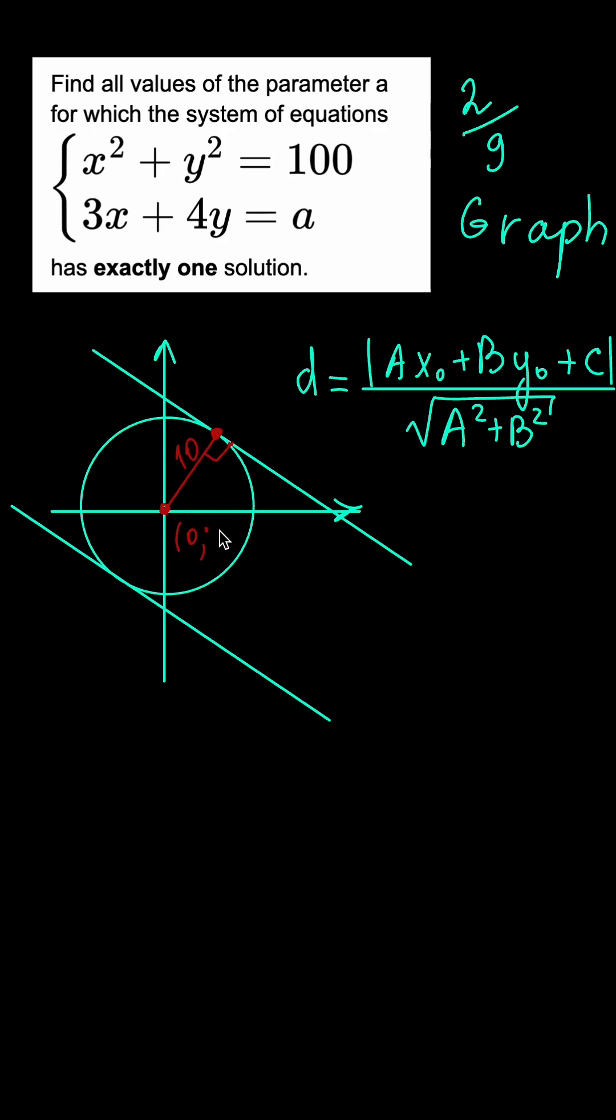So we have a point with coordinates 0,0 and a line defined by 3x plus 4y minus A equals 0. So we have to substitute x and y here with 0,0 and divide it by the square root of 3 squared plus 4 squared.